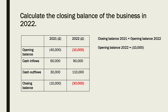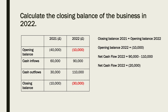Next, we need to work out the net cash flow for 2022, so we compare the inflows and outflows. They had £90,000 coming in as inflows, but cash outflows were more than that at £110,000. The difference between those is minus or negative £20,000.